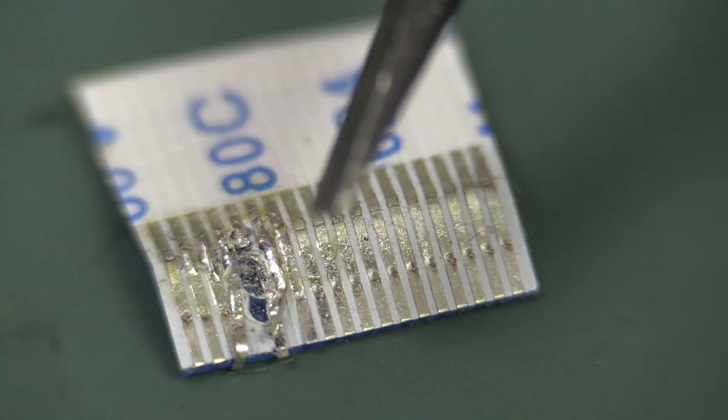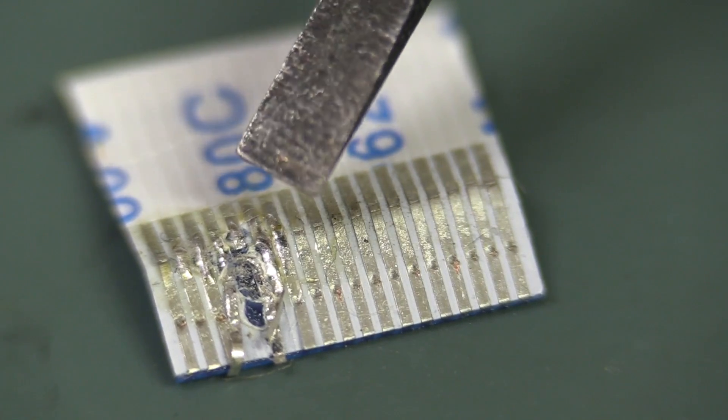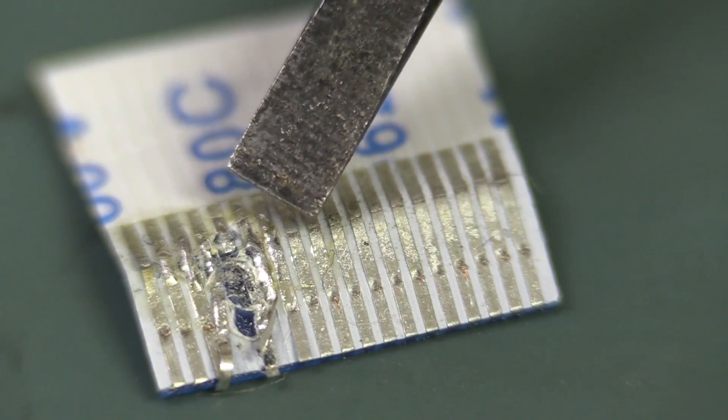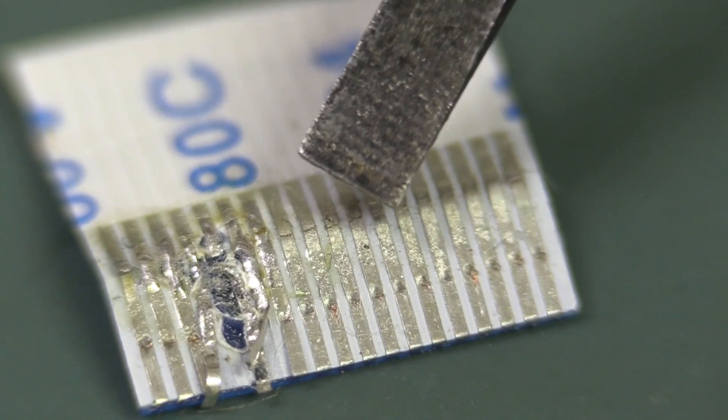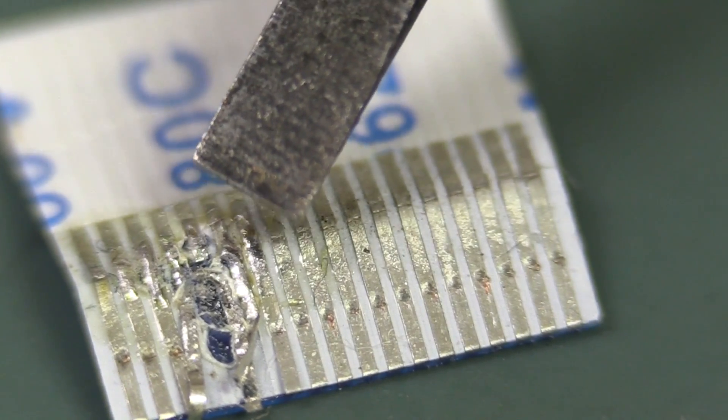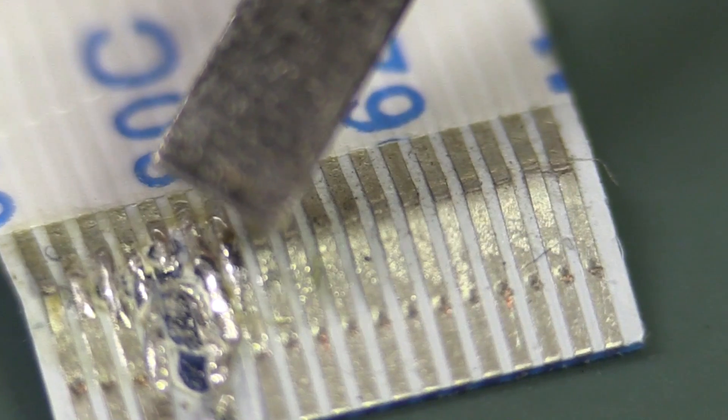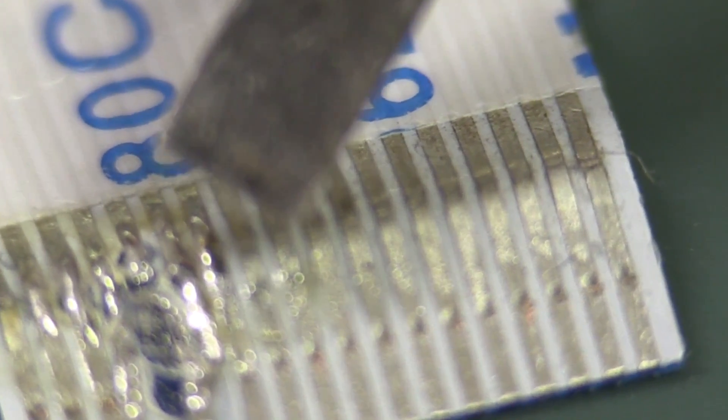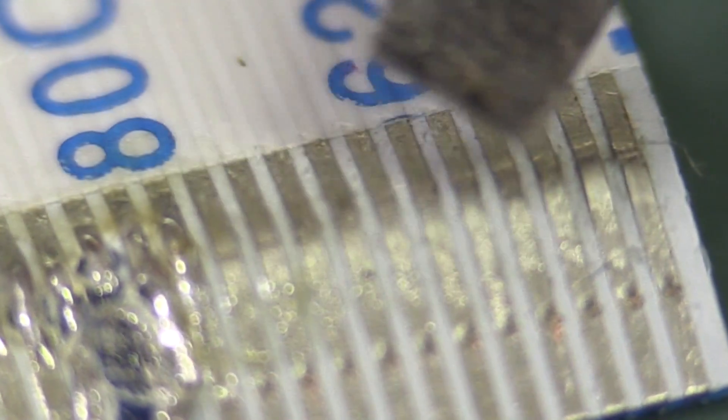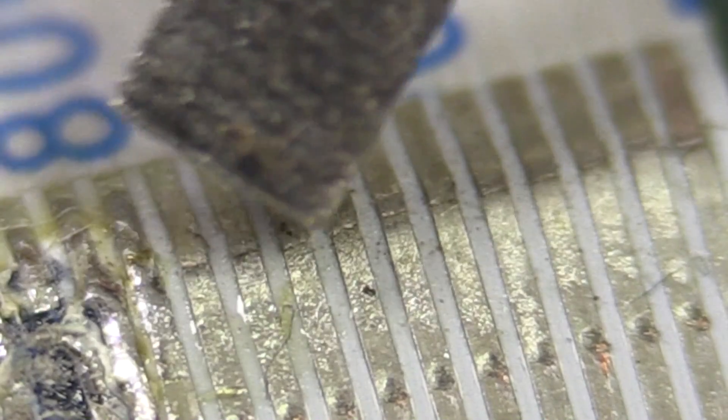And this is quite a common fault with these flat flexes. This is obviously the pinch line where it exited from the board mount connector. And if you flex it too many times, then you can get little micro-breaks in your traces like that.